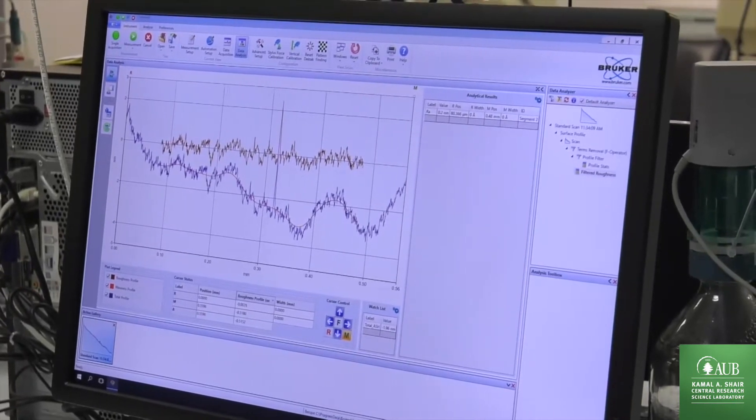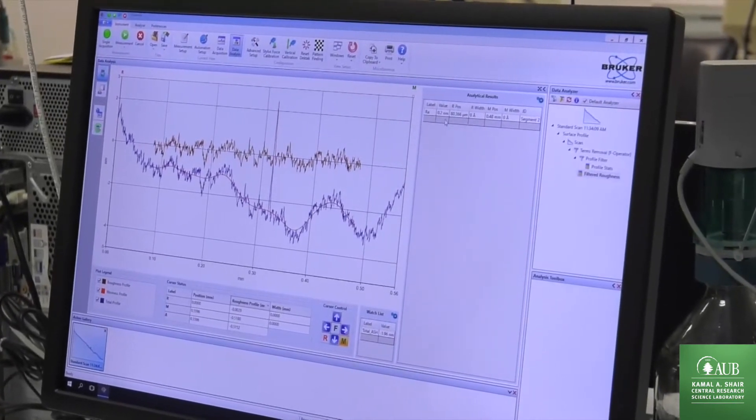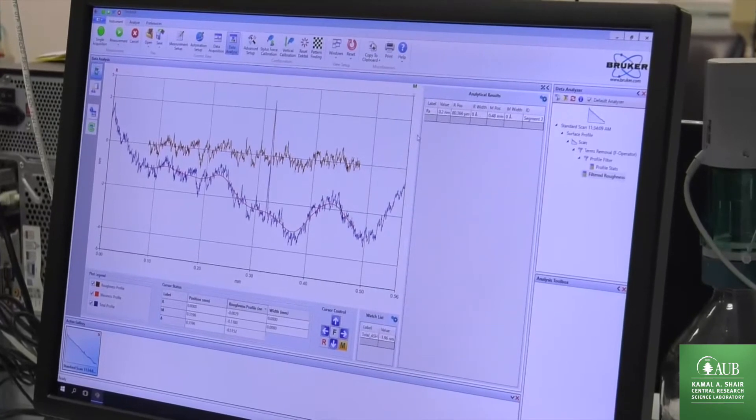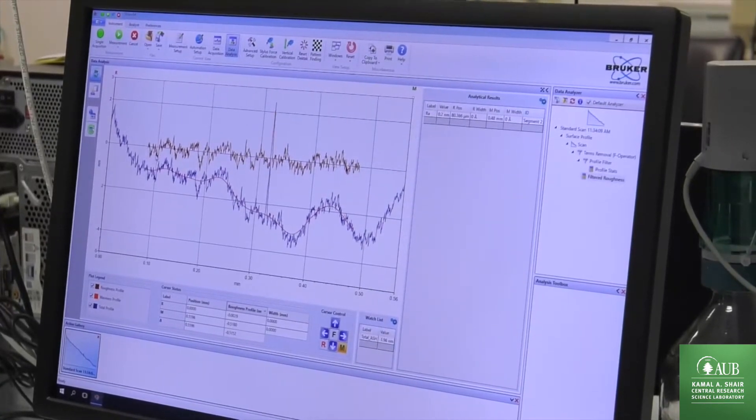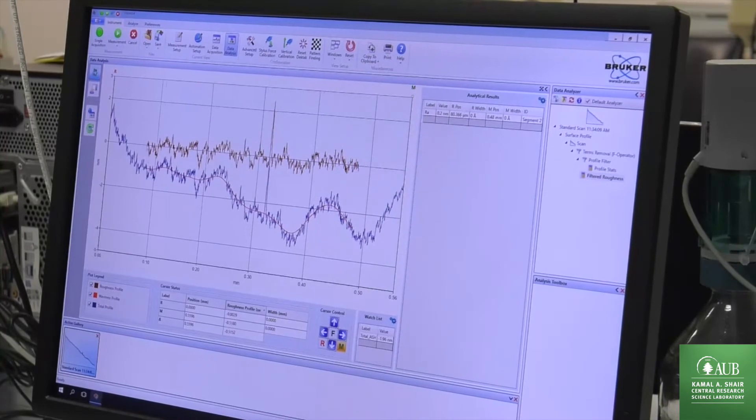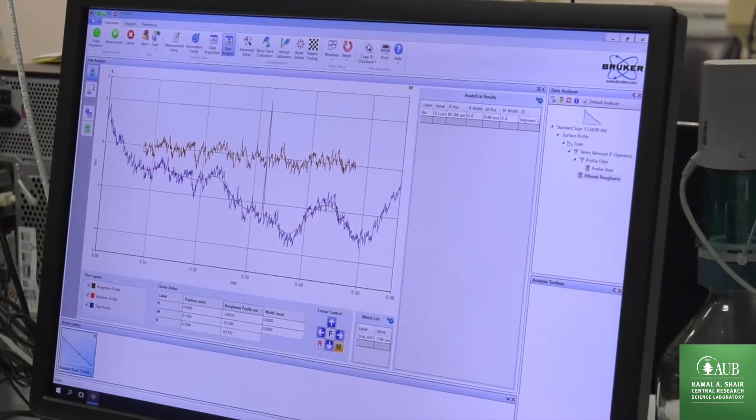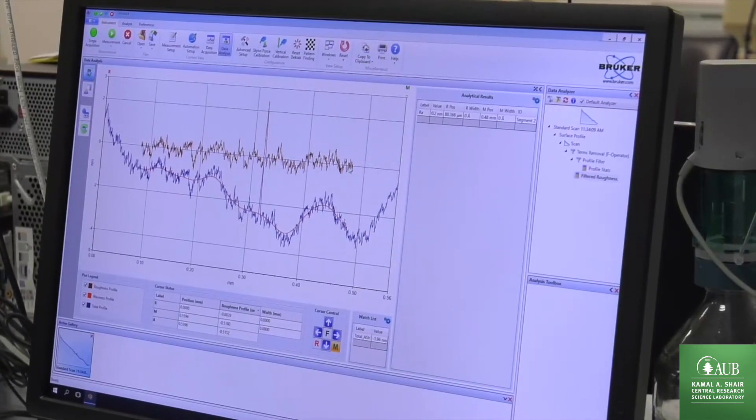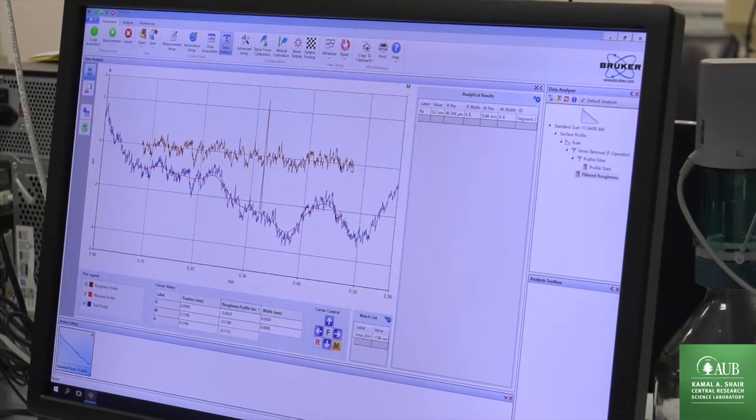And now I will always find my roughness, my RA roughness, measured according to the ISO norm between 1 seventh and 6 sevenths of the scan length, which has also been selected based on the ISO norm.